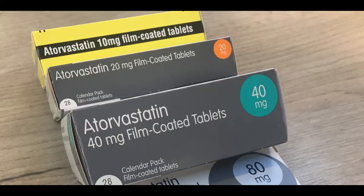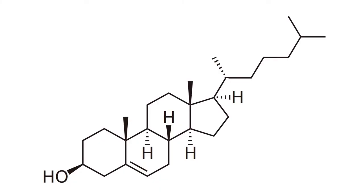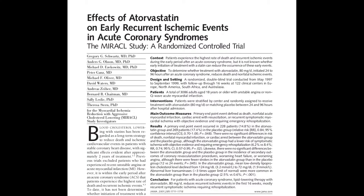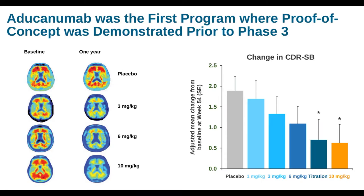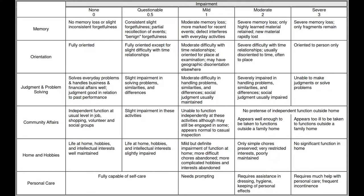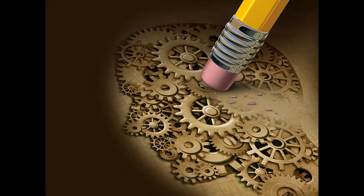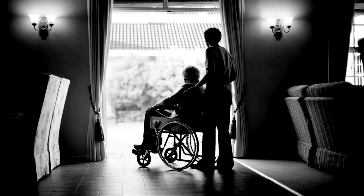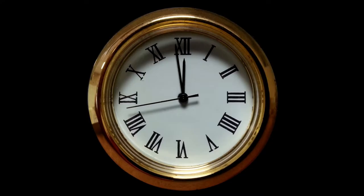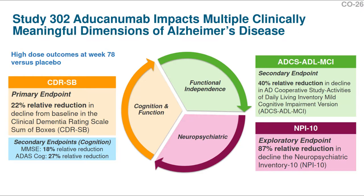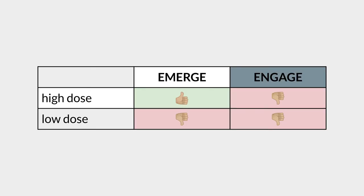Atorvastatin reduces cholesterol, but do people really care about that? I mean, cholesterol is something that your patients can't really see or feel. They want to know whether atorvastatin will reduce their risk for heart attacks, strokes, and dying. Likewise, do your patients' families really care about amyloid beta plaques or CDR scores? Probably not directly. They want mom's memory to get back to normal. They don't want to send her to a nursing home. They want her to live longer. Does aducanumab accomplish any of these things? Well, we don't really know.